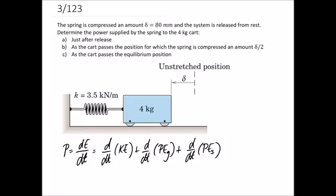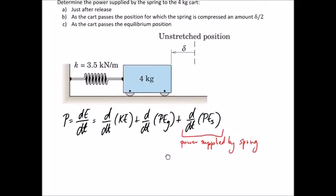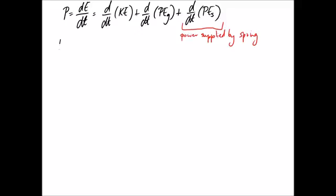Re-reading the question, it asks us to determine the power supplied by the spring. So that's going to be this final term here. This is power supplied by spring. So that's the only term of interest in terms of what the question actually wants us to find. So let's just pick that part out. I'm going to call it P spring. And we're going to say it's equal to just the derivative of the spring potential. So I can replace the spring potential energy with a half kx squared.